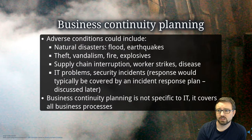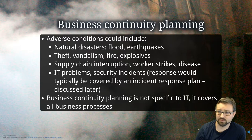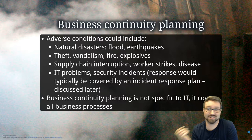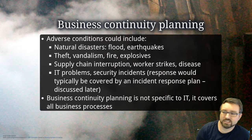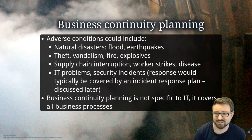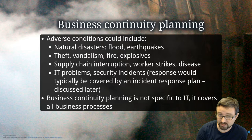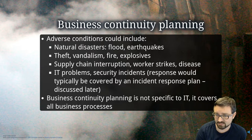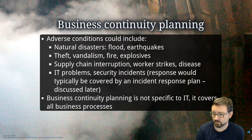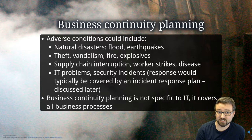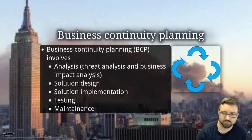The adverse conditions covered by business continuity planning include natural disasters like floods, earthquakes, and tornadoes, as well as theft, vandalism, fire, explosives, supply chain interruptions, worker strikes, disease, and IT problems — which can include security incidents. The response to security incidents would typically fall under the incident response plan, but the business continuity plan as a whole is not specific to IT; it covers all sorts of scenarios.